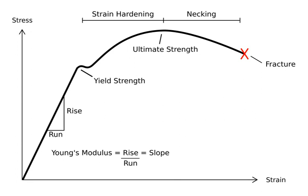In material science, resilience is the ability of a material to absorb energy when it is deformed elastically, and release that energy upon unloading. Proof resilience is defined as the maximum energy that can be absorbed up to the elastic limit without creating a permanent distortion. The modulus of resilience is defined as the maximum energy that can be absorbed per unit volume without creating a permanent distortion. It can be calculated by integrating the stress-strain curve from zero to the elastic limit.